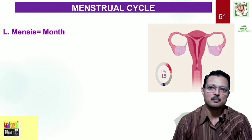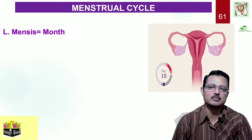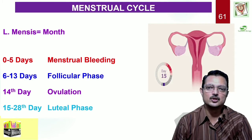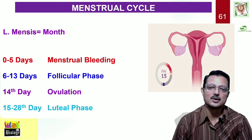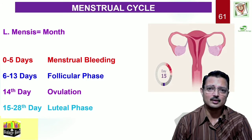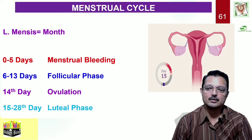The word menstrual is derived from menses, which means a month. Regarding the four sub-phases: let us take the day when bleeding starts as day zero. From day zero to the fifth day is the bleeding phase, which we call the menstrual phase. From the sixth to the thirteenth day, the follicle continues to grow, develop, and forms a mature Graafian follicle — that comes under the follicular phase.